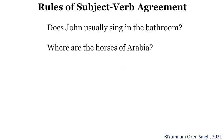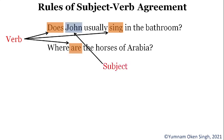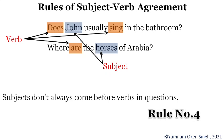Now let's have a look at question sentences: 'Does John usually sing in the bedroom?' and 'Where are the horses of Arabia?' In the first, 'does' is singular form and the subject is 'John.' In the second, 'are' is the verb and 'horses' is the subject. In questions, subjects do not always come before the verb. We must carefully find the subject so we do not break the agreement. This is Rule Number Four.